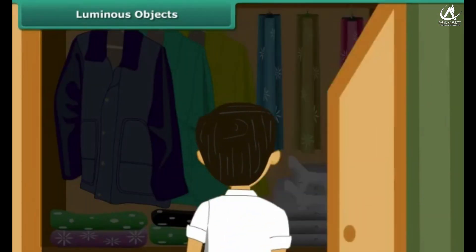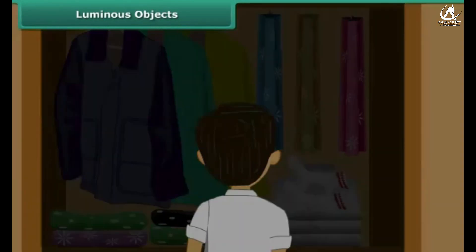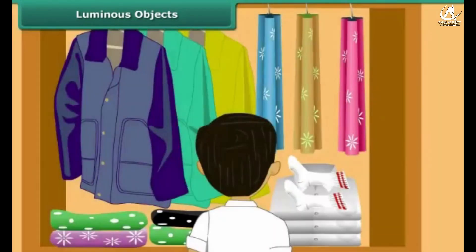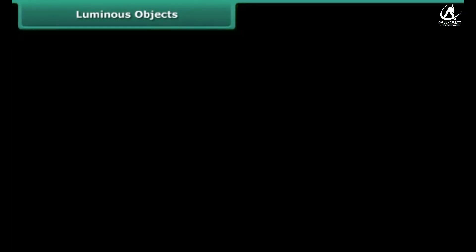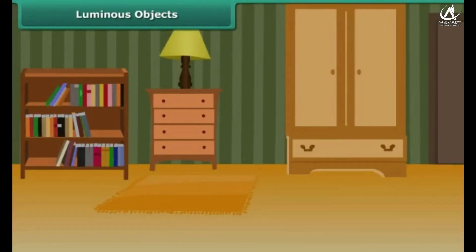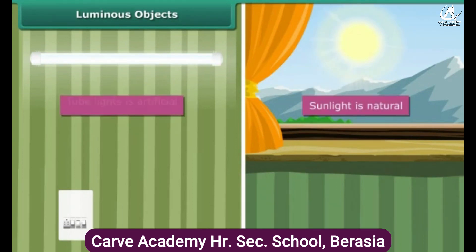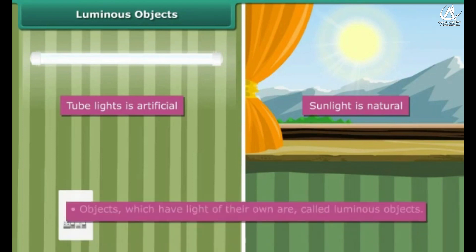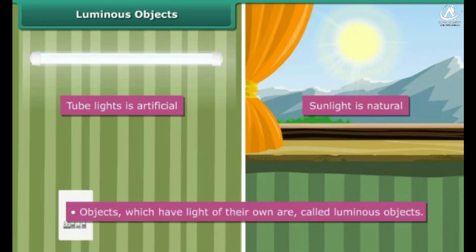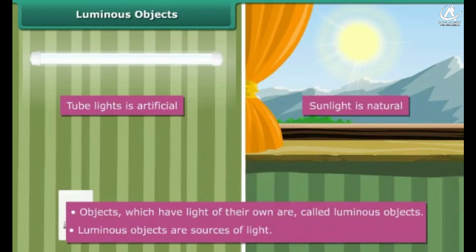You are getting late for school and are not able to find your socks. You search for them in the cupboard. Since the cupboard is dark, you switch the tube lights on. Once you locate the socks, you switch the lights off because there is sufficient daylight. We just talked about two types of light: light from the tube lights and daylight, which is the light from the Sun. Sunlight is natural light; tube lights are artificial. Objects which have light of their own are called luminous objects. Both the Sun and tube lights are luminous objects — the Sun is a natural luminous object and tube lights are artificial man-made luminous objects. Luminous objects are sources of light.